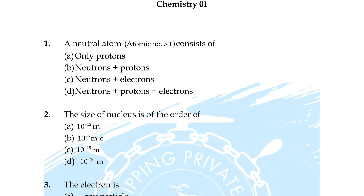Question number 28: for an ideal gas, the number of moles per liter in terms of pressure P, gas constant R, and temperature T is — option A: PT/R, option B: P×R×T, option C: P/RT, option D: RT/P. Correct answer is option C: P/RT.